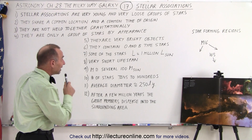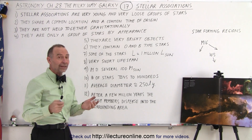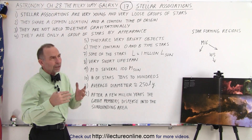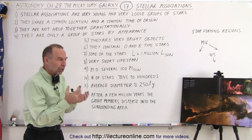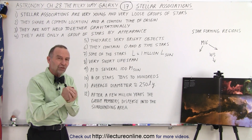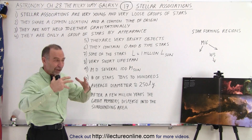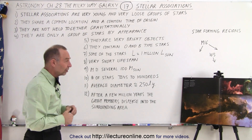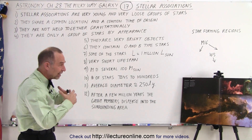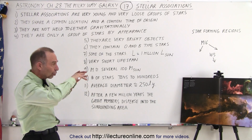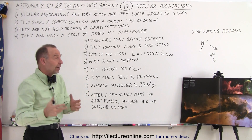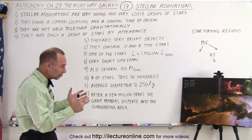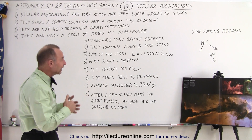They are indeed very bright objects. It turns out that most of these contain, relatively speaking, a lot of very bright stars — the O and B type stars. They're very bright blue giants on the main sequence. They give off an enormous amount of light, so as a grouping they are indeed very bright objects — among the brightest objects in the galaxy.